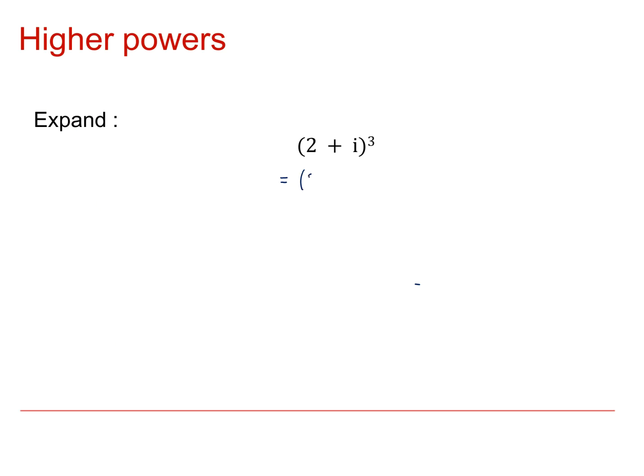Writing this out, we get 2 plus i times 2 plus i times 2 plus i. Dealing with the first bracket first, we get 4 plus 2i plus 2i is 4i plus i squared, multiplied by 2 plus i. And that's 4 minus 1, which is 3, plus 4i, multiplied by 2 plus i.